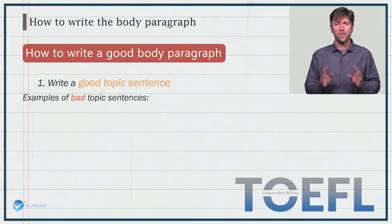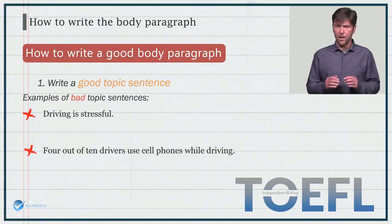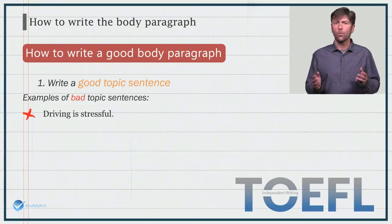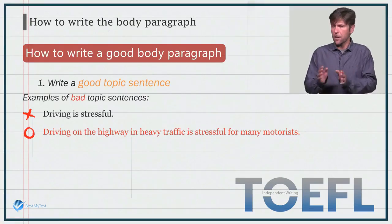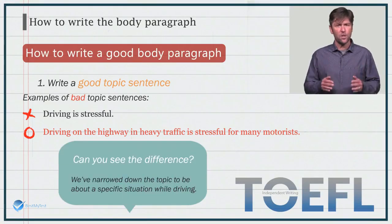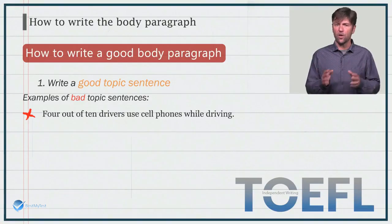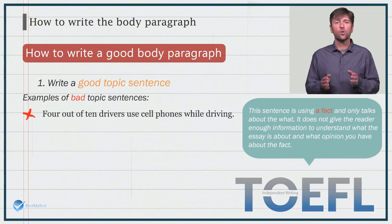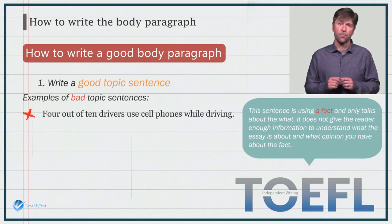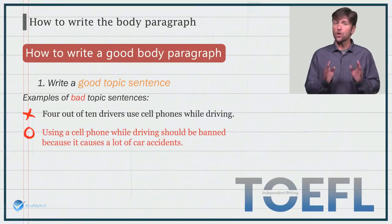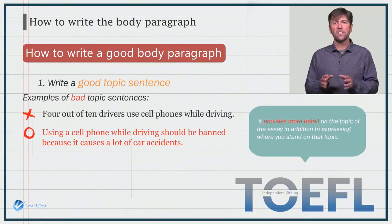Let's look at some examples of bad topic sentences. 'Driving is stressful.' '4 out of 10 drivers use cell phones while driving.' Why are they bad? Well, the first one, 'driving is stressful,' is too broad. A good topic sentence should be: 'Driving on the highway in heavy traffic is stressful for many motorists.' We've narrowed down the topic to be about a specific situation while driving. The second one, '4 out of 10 drivers use cell phones while driving,' is using a fact and only talks about the 'what.' It does not give the reader enough information to understand what the essay is about and what opinion you have about this fact. A good topic sentence would be: 'Using a cell phone while driving should be banned because it causes a lot of car accidents.' You should immediately be able to see a difference, as it provides more detail on the topic and expresses where you stand on that topic.